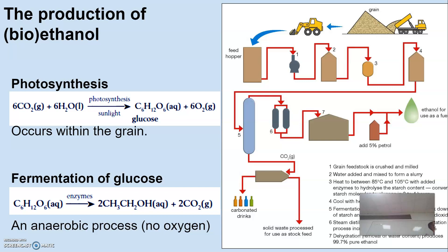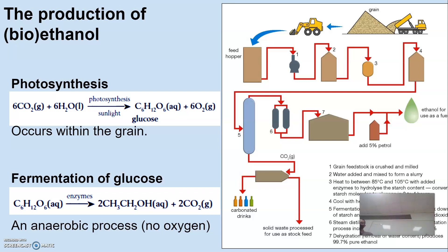We take the glucose and then ferment it — anaerobically. Aerobic means with oxygen, and the prefix 'an' means not, so anaerobic means no oxygen present. Ordinarily in cellular respiration, we breathe in oxygen, which breaks glucose down into carbon dioxide and water — that's how we get our energy.